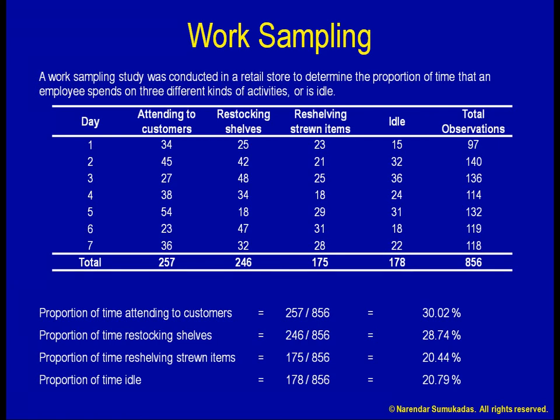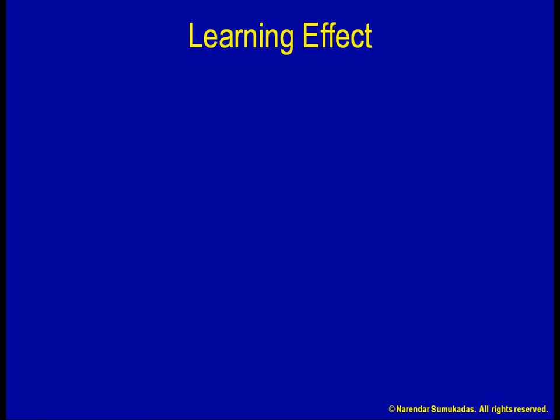Whenever we are measuring work or trying to set a time standard, we need to take into account the fact that, with repetition, people and processes get better at doing things. This is called the learning effect or the experience effect. Generally speaking, the more complex the activity, the greater the opportunity for learning and improvement. With a less complex activity, although the learning rate might not be high, the number of iterations is likely to be high, such as in a line flow situation. Either way, it becomes important to correctly estimate the learning rate.